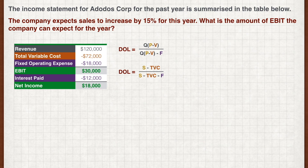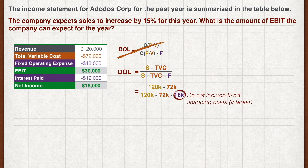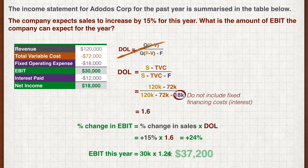And we're back. Since we're not given unit sales, the first formula is not suitable for this question. We shall use the second formula to calculate DOL. Plug in the figures where sales is $120,000, total variable cost is $72,000, and fixed operating cost is $18,000. Take special note not to include any fixed financing costs like interest. Punch the numbers into your calculator and you get a DOL of 1.6. The percentage change in EBIT is the percentage change in sales times the DOL. Plug in the figures and we get an increase of 24%. Therefore, the amount of EBIT Dodus Corp can expect for the year is $37,200.